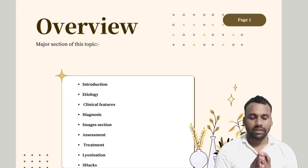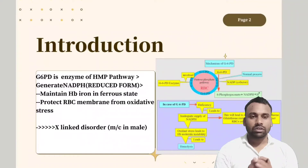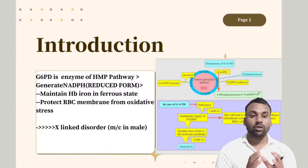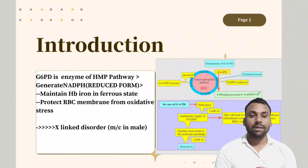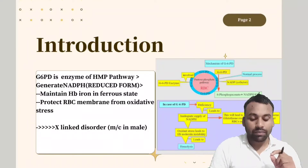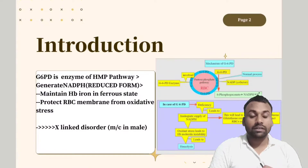For the introduction, we should understand what G6PD means. G6PD is an enzyme known as glucose-6-phosphate dehydrogenase, which is mainly an enzyme of the HMP pathway — the hexose monophosphate pathway. This hexose monophosphate pathway is mainly responsible for the generation of NADPH.